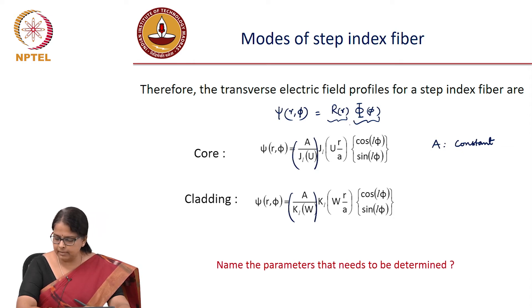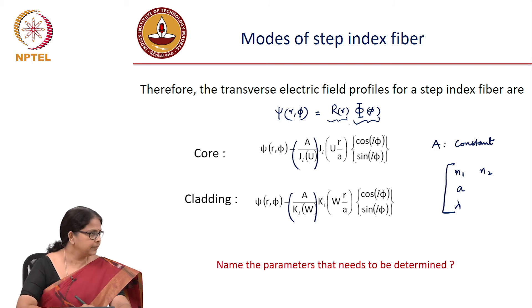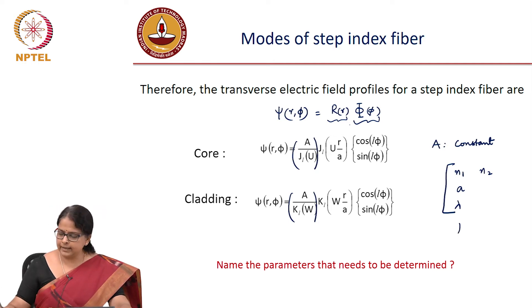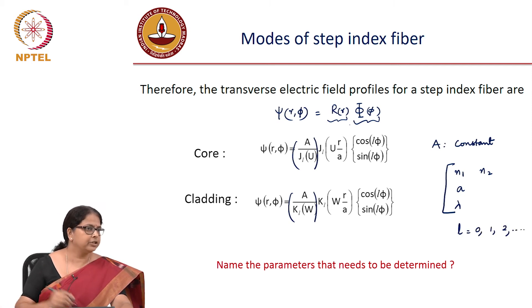And what are the parameters that need to be determined now? Do we know the capital R function? I do not, so when you start with a fiber, what are the parameters that you know? You know n₁, you know n₂, you know the core radius a, then you know the λ. And so these are your input fiber parameters. What else do you know? Do you know anything about L? You know that L can take 0, 1, 2, etc. I should try out for L equal to 0, 1, 2, 3, etc.